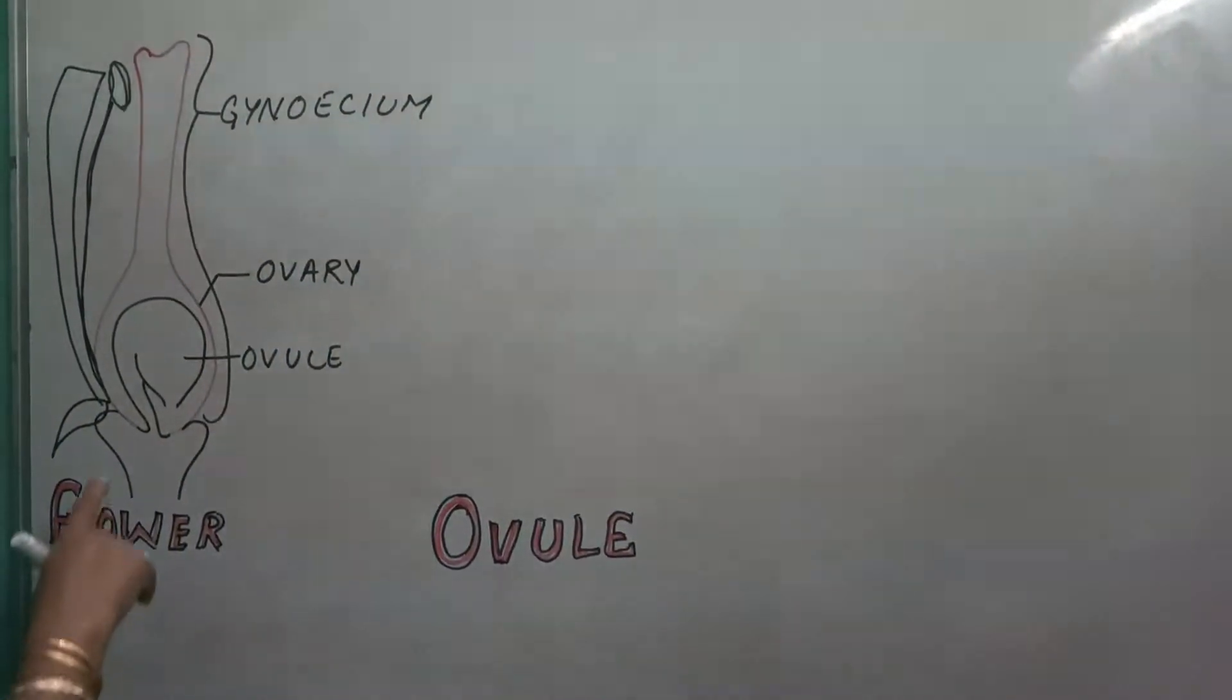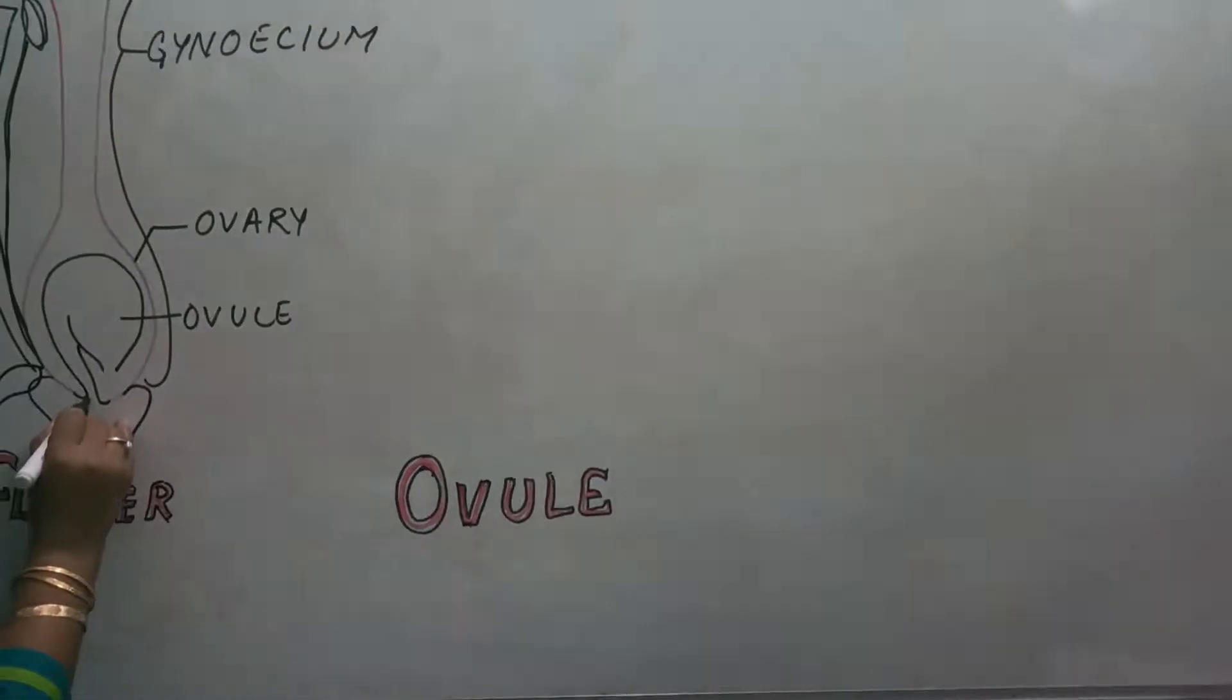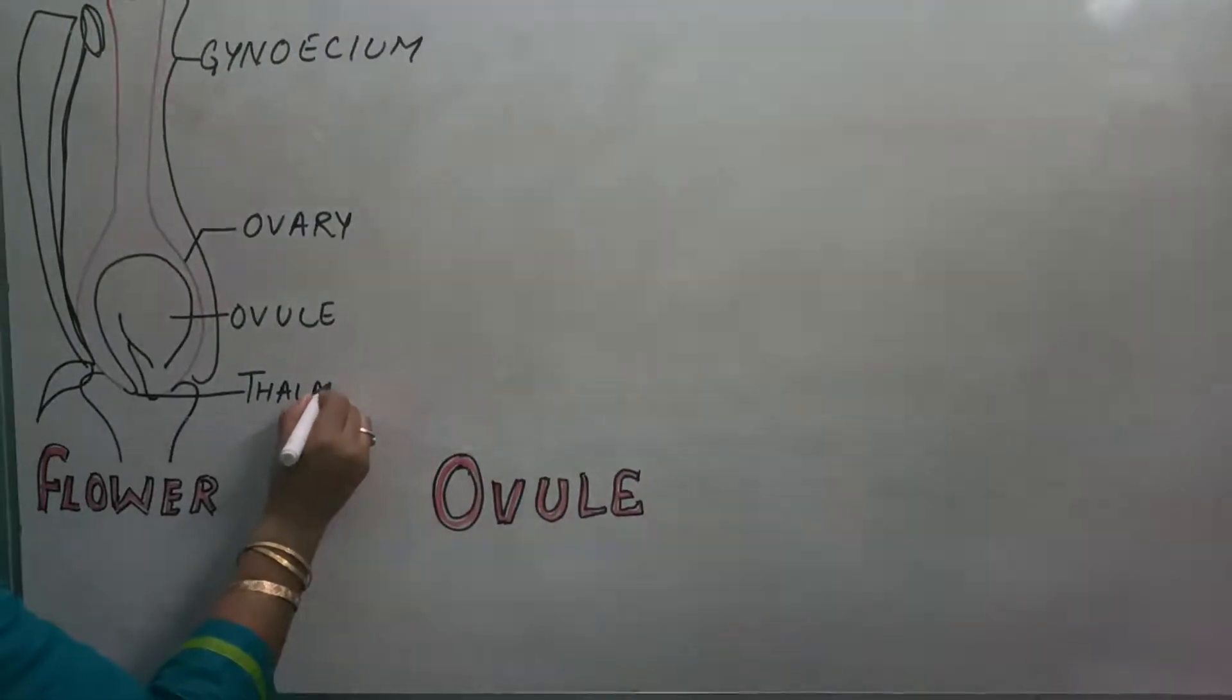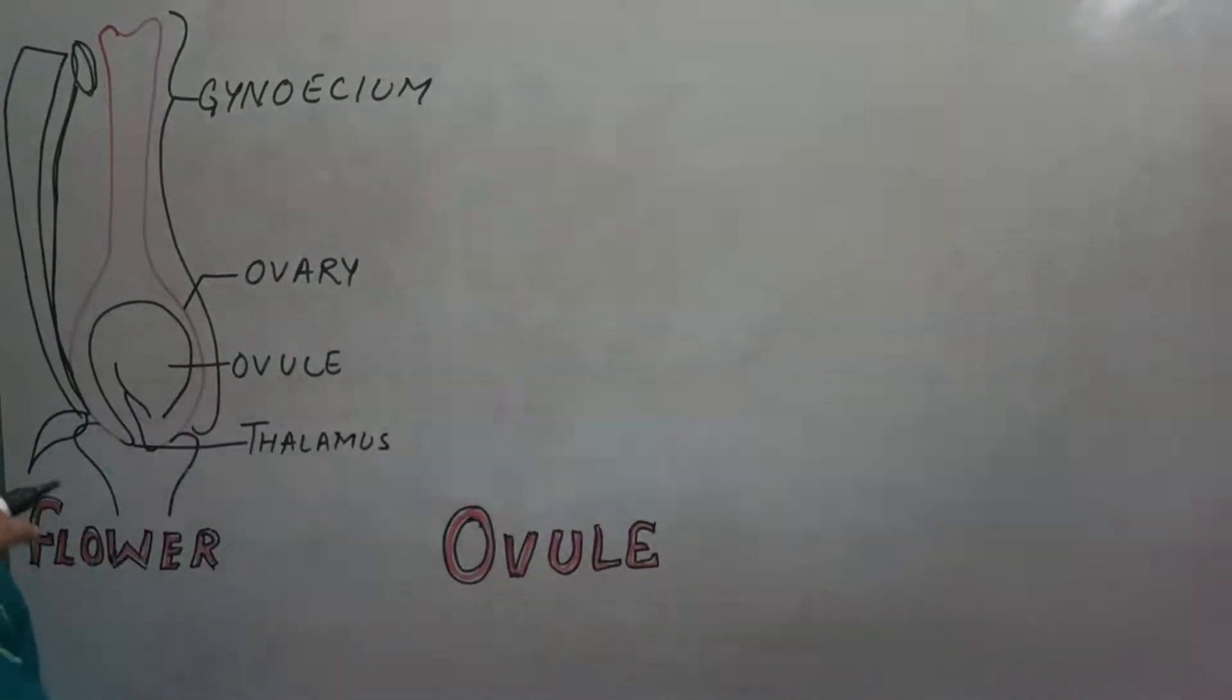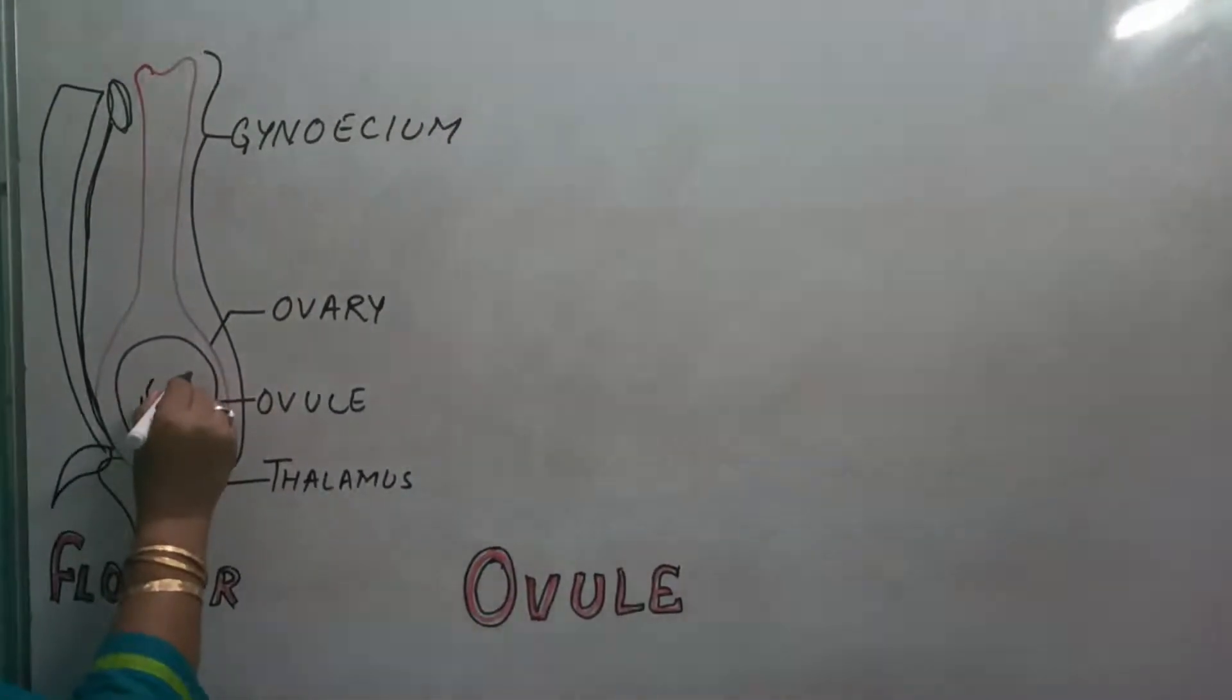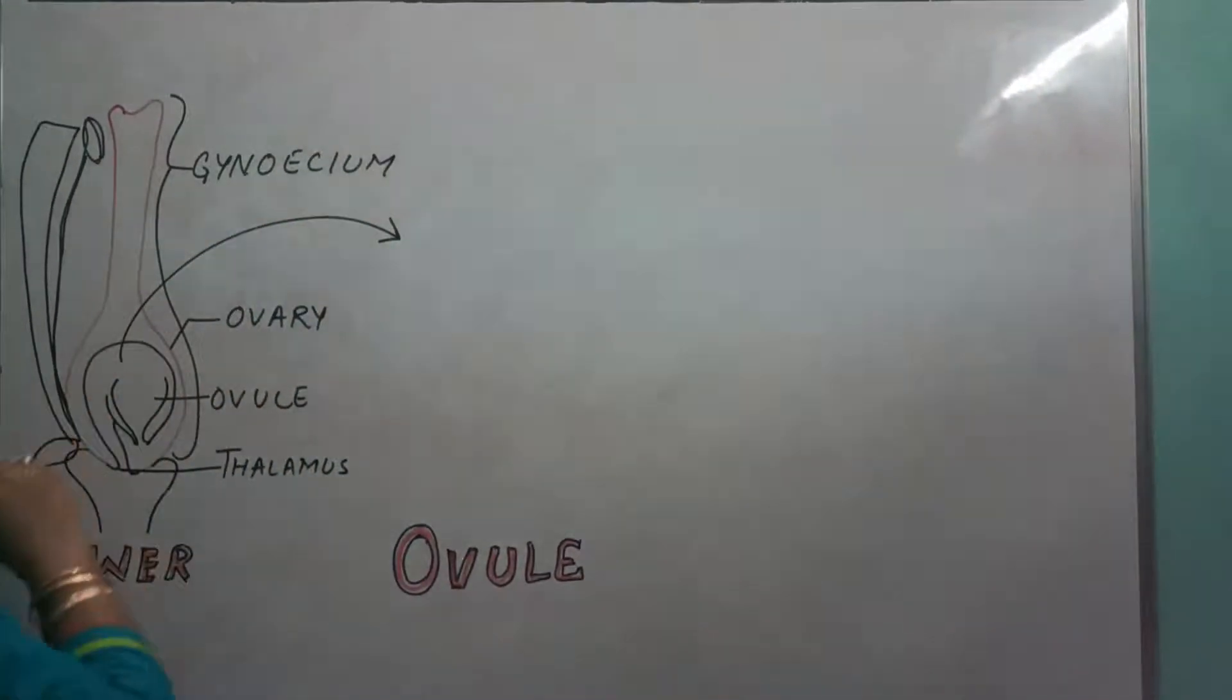Now I am going to take out the structure of this part, ovule, which is the funicle, the stalk of the ovule. You can observe it is attached at the base, that is termed as thalamus. Now, take out the part that is ovule outside. So this ovule is responsible for making the seed after the fertilization. But first of all, we will be discussing the internal structure of ovule.